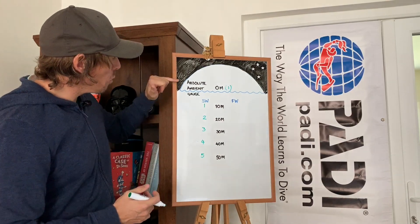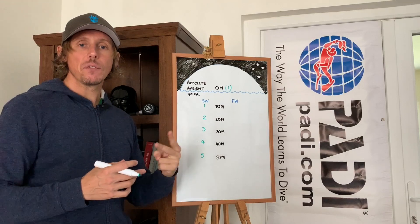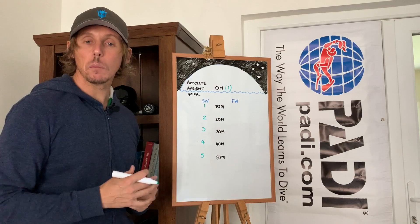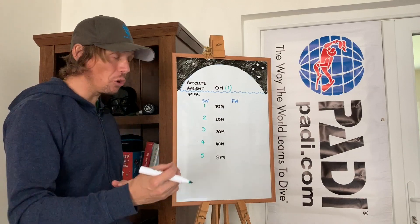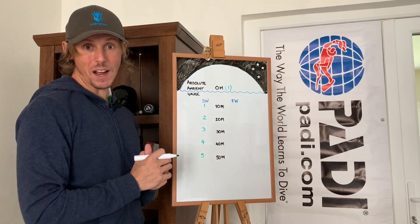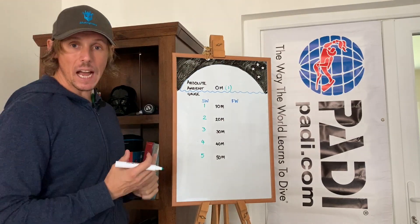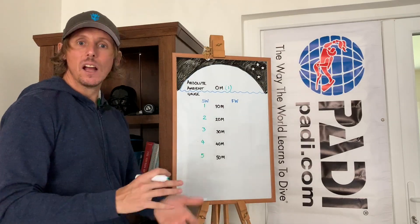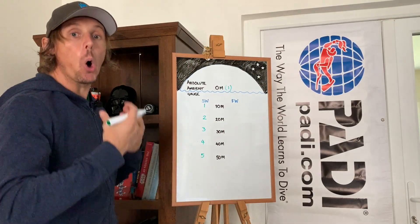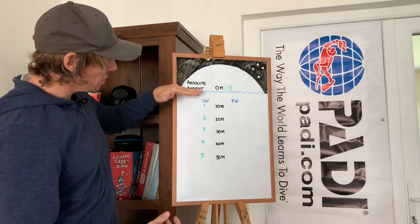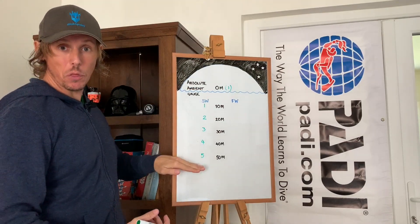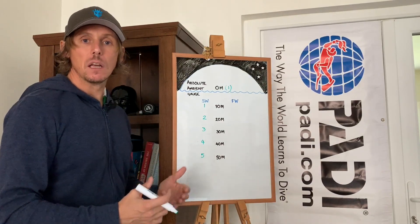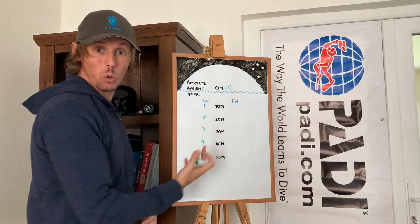If we move on to absolute and ambient, they are two different words, two different terms, but in diving we consider them to be the same thing — we do not differentiate between them. They even share the same starting letter A, meaning 'all.' So all of the pressure. Whereas gauge pressure just deals with the water, absolute and ambient deal with everything, including atmospheric pressure — the one.